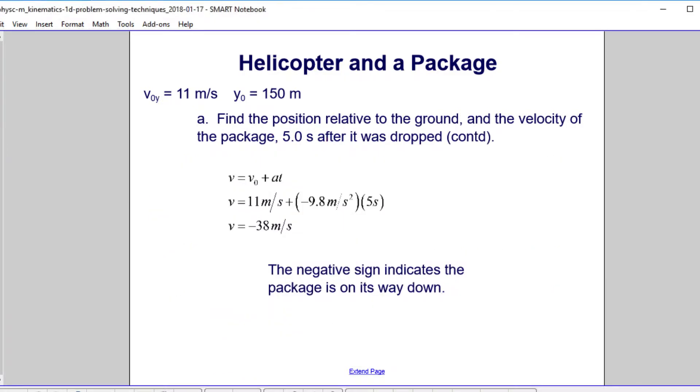Now we'd like to find the velocity 5 seconds after it was dropped. Here we just have the first kinematics equation. We put in our initial velocity, add in the acceleration term, which is negative 9.8, times 5 seconds. And the package is doing negative 38 meters per second. The negative sign tells us that the package is on its way down here.